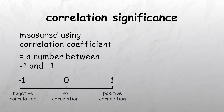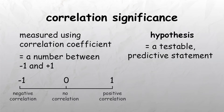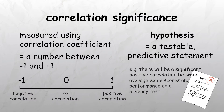When carrying out a correlation analysis, it is expected that the researcher will start with a hypothesis, which is a testable predictive statement. The hypothesis will state what the researcher expects to find out about the relationship between two variables. For example, that there will be a significant positive correlation between average exam scores and performance on a memory test. It is important that the two variables are clearly stated in the hypothesis.